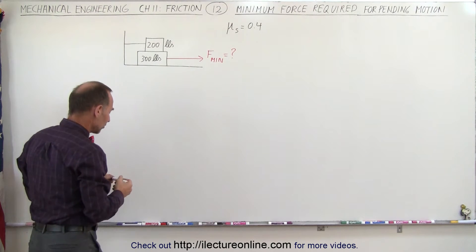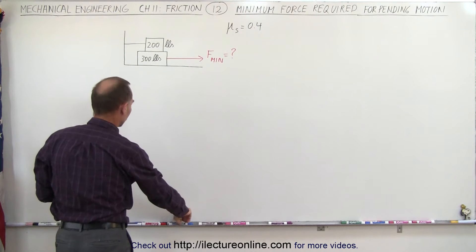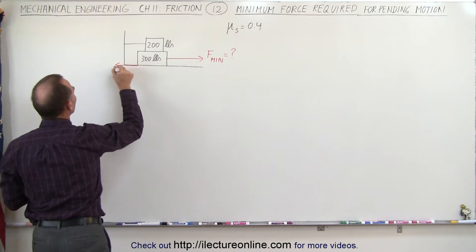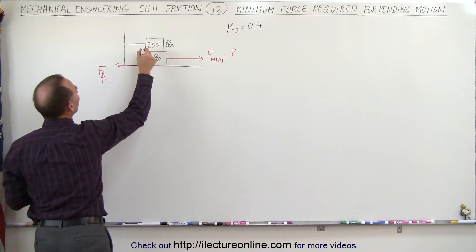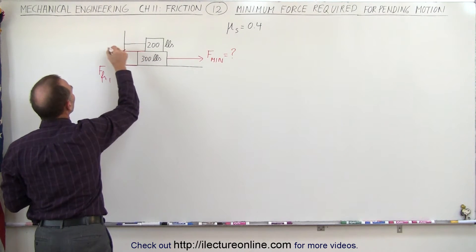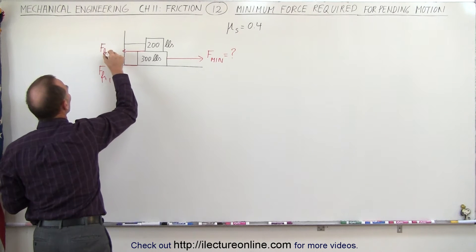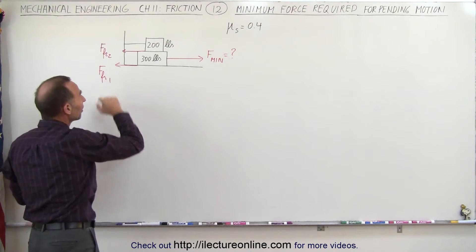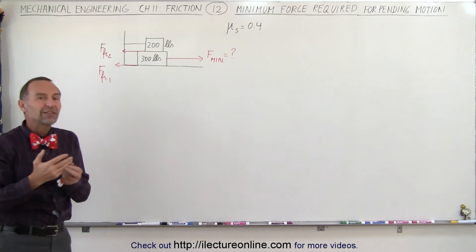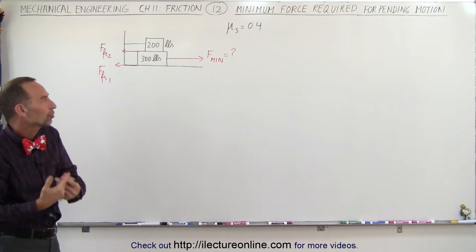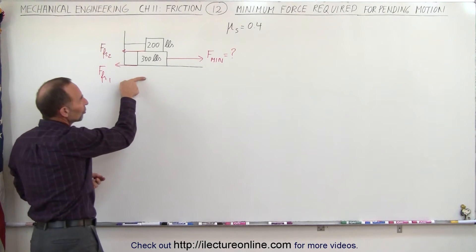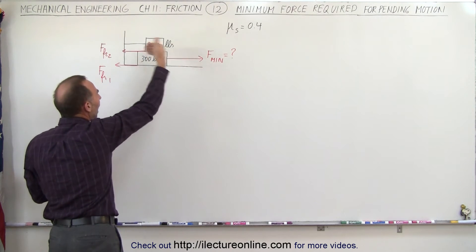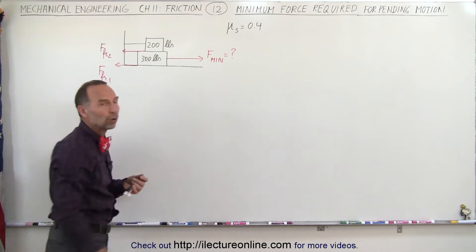We're going to have two friction forces. We're going to have a friction force over here — let's call that friction force 1 — and a friction force here, let's call that friction force 2. Why are both friction forces directed to the left? Because friction forces tend to try to prevent the motion from happening. Since the motion is going to be in this direction without friction, the friction force acts in the opposite direction to try and stop that motion.